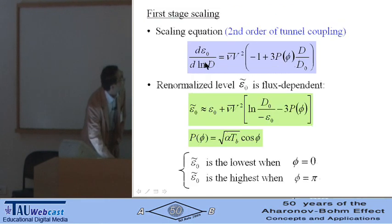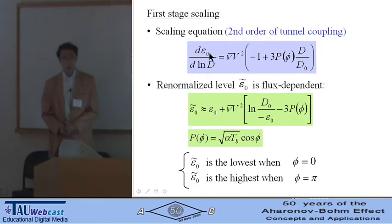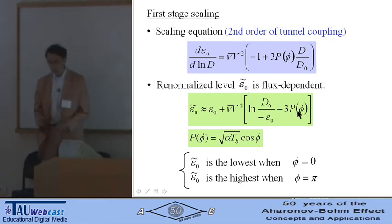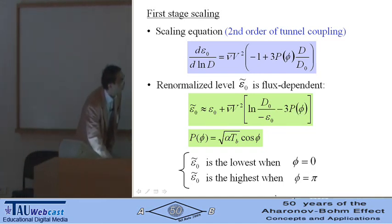In the first stage scaling, we obtain the scaling equation for the energy level in the quantum dot. This is the renormalized level in the quantum dot. It is flux dependent through the function P(φ). The renormalized level is the lowest when the AB phase is zero, and highest when the AB phase is π.